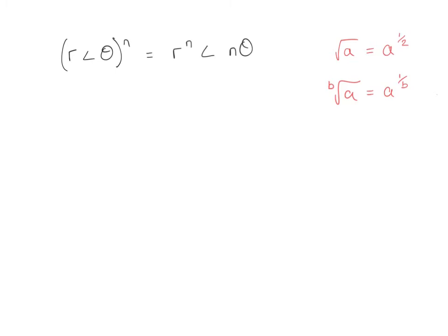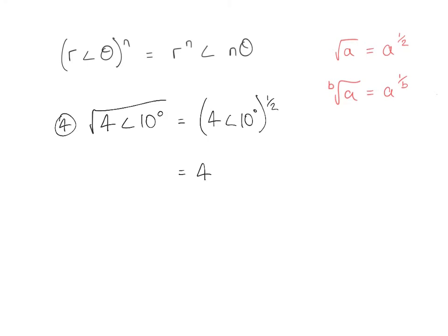For example 4, we want to find the square root of 4 at an angle of 10 degrees. The square root is the same as raising to the power 1 over 2, so we have 4 at an angle of 10 degrees to the power one half. Using De Moivre's theorem, that's 4 to the power of a half at an angle of a half times 10 degrees. Simplifying: the square root of 4 is 2, and the angle is a half times 10, which is 5. So our solution is 2 at an angle of 5 degrees.